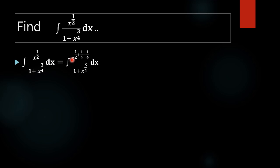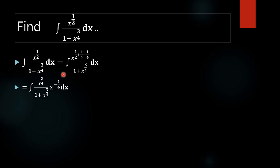So by splitting, we will get x raised to 3/4 multiplied by x raised to minus 1/4. We are getting this because x raised to 1/2 plus 1/4 is x raised to 3/4, and the remaining part is x raised to minus 1/4. What we are using here is the law of exponents: a raised to m plus n equals a raised to m into a raised to n.